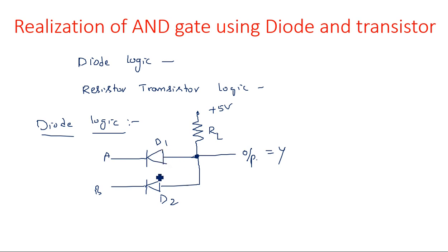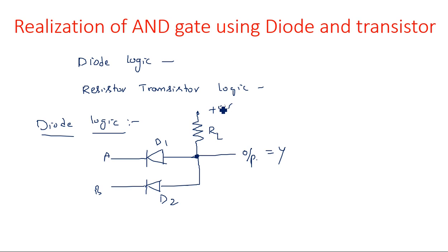Previously, for the OR gate operation, the two diodes were in forward connection and the load resistance was connected between output and ground. But here in the AND gate, the load resistance is connected between output and plus 5 volts.